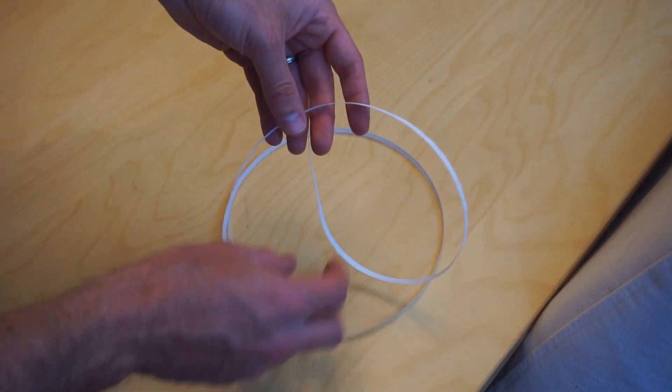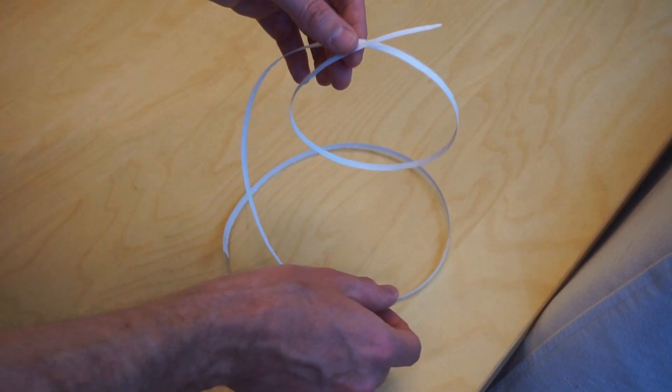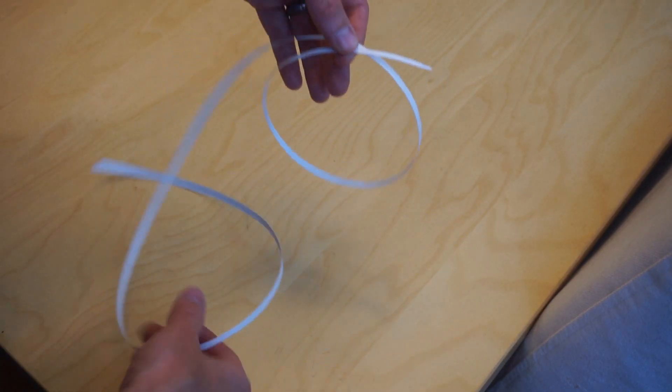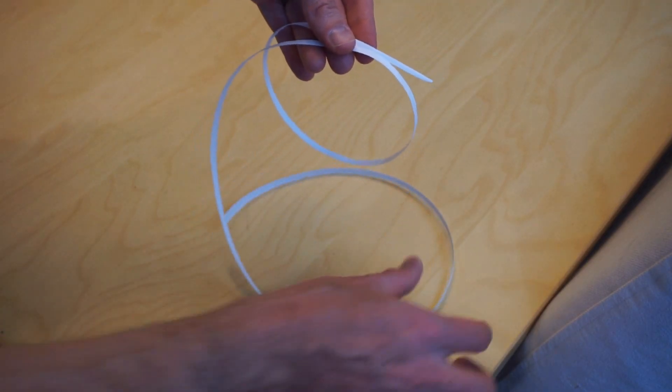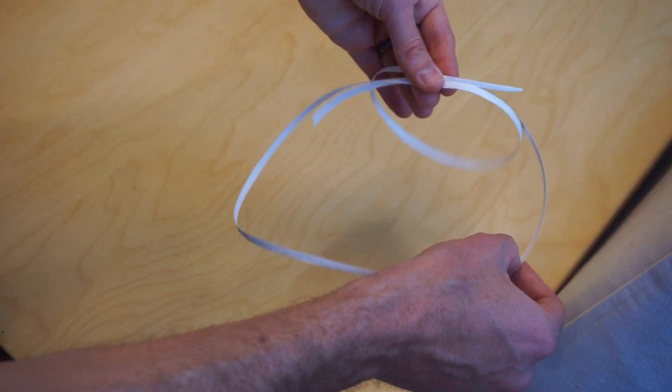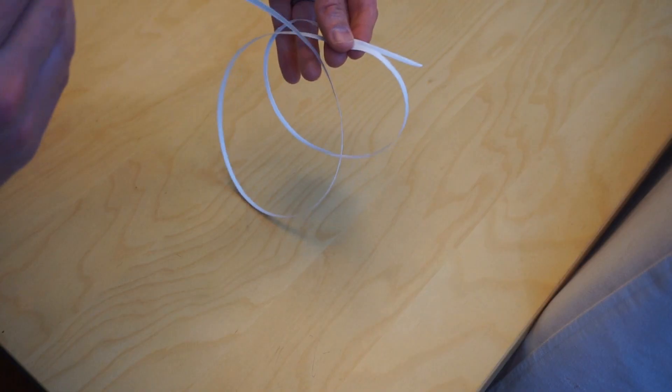I'll show you how it's made with a long strip of paper. All it is is a bunch of concentric loops all looped through each other. So if you start with one loop, and then you loop it through itself to get another loop.